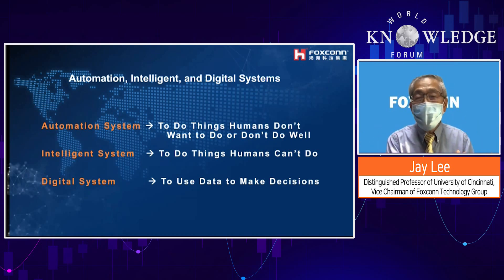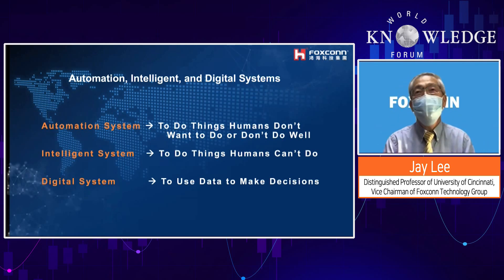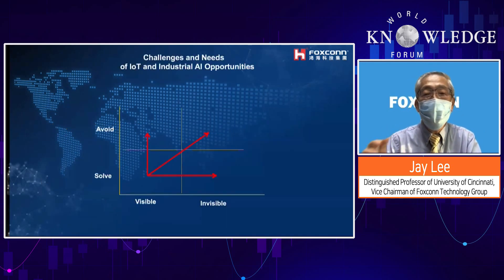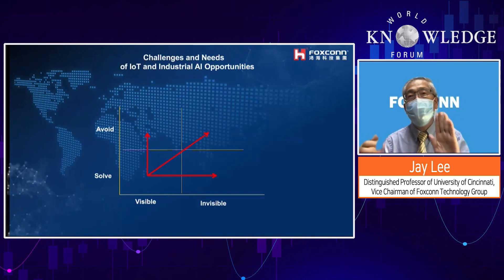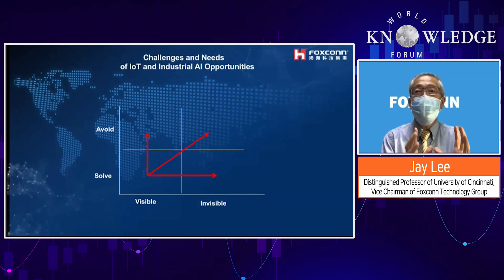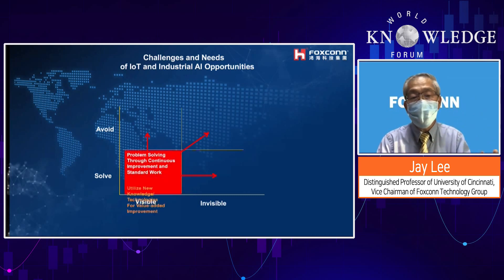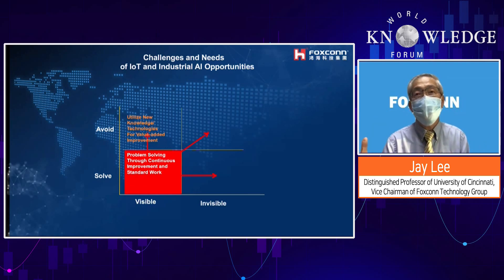The definition of a digital system in one sentence: using data to help humans make decisions. Today most of us still rely on experience to make decisions, so we have a journey to build that infrastructure. In engineering, I call this the visible versus invisible space. In the visible space, we tend to solve the problem first, then move to avoidance. But in the invisible space, there's a lot you don't see.